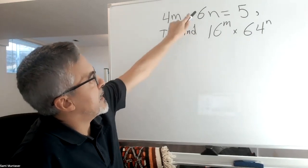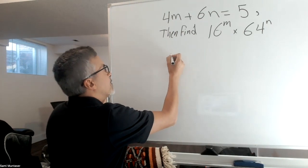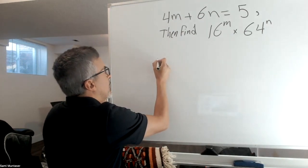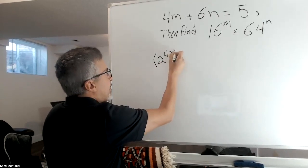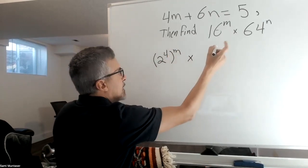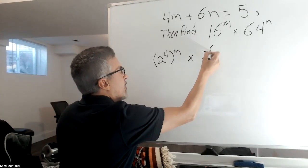So we have to make a relationship between the two equations. I think what I'm going to do first is make the 16 to the m as 2 to the power of 4. We have the m outside times, and 64, I'm going to make it 2 to the power of 6.